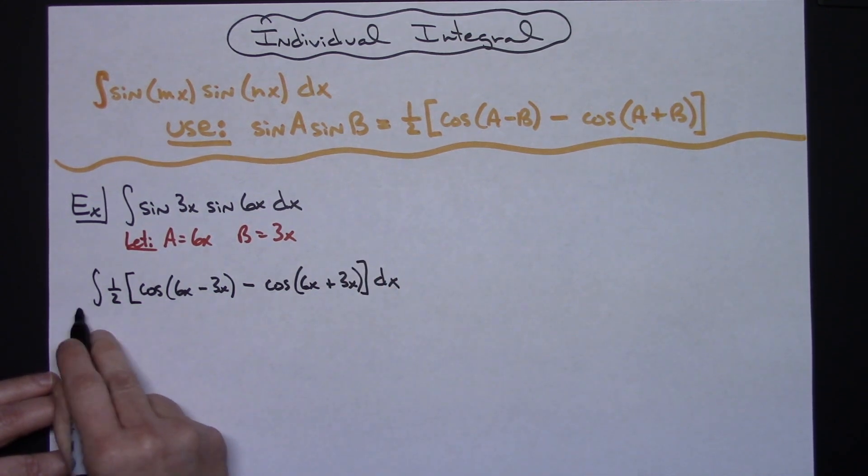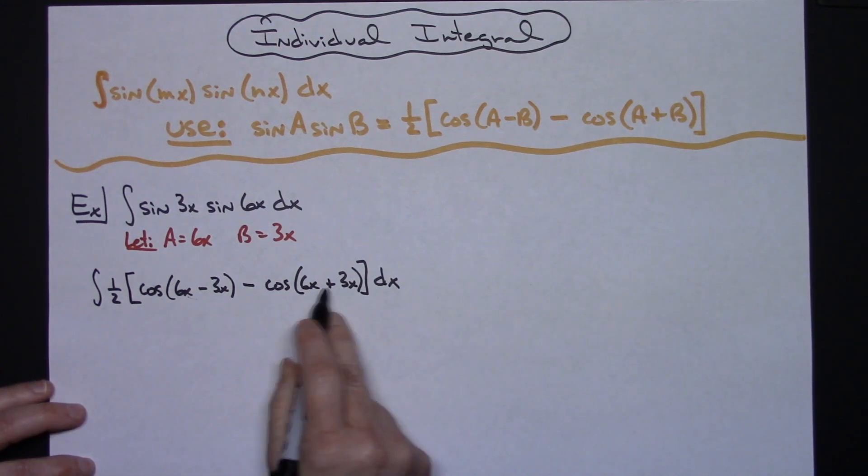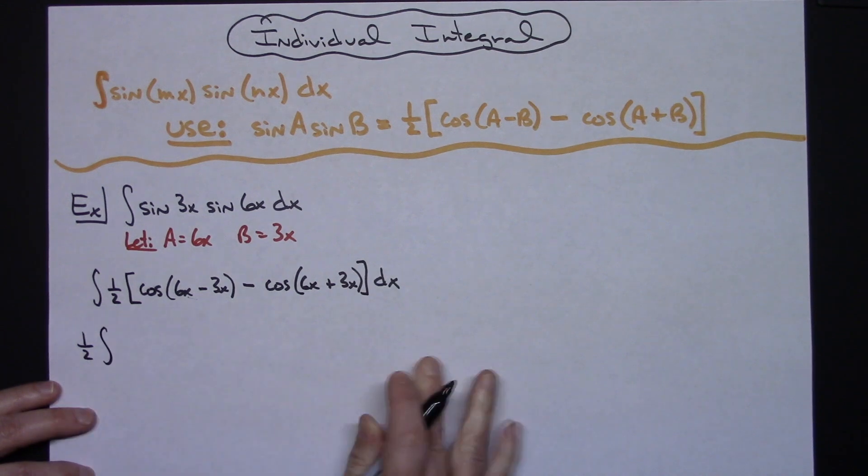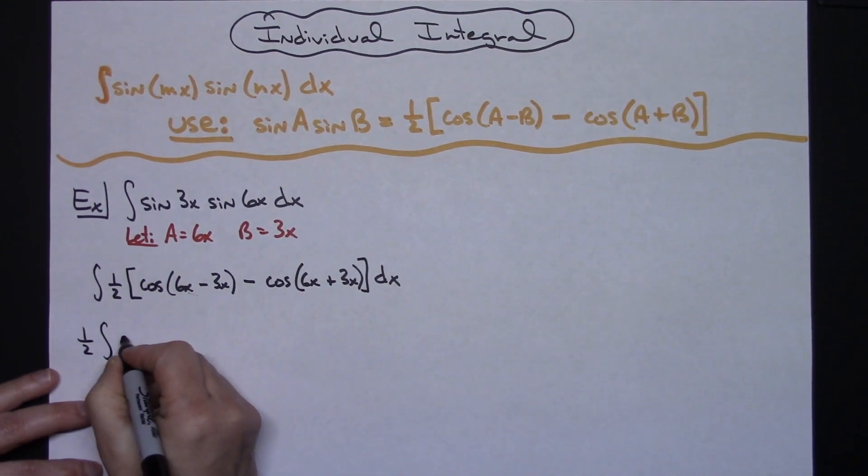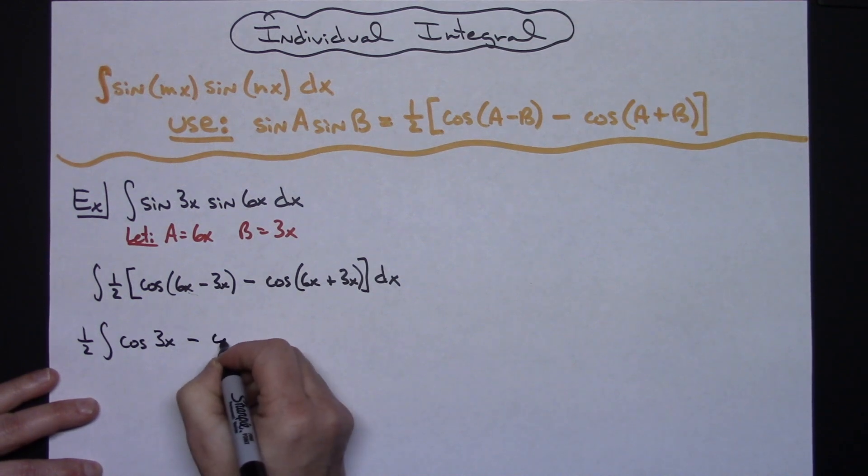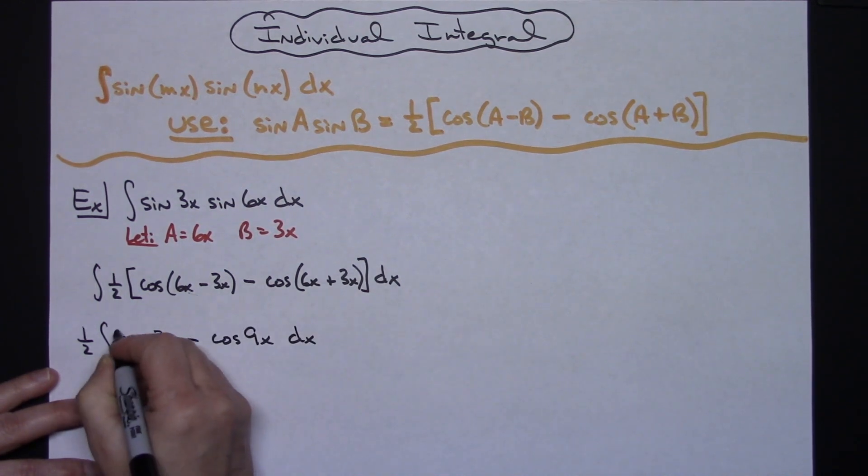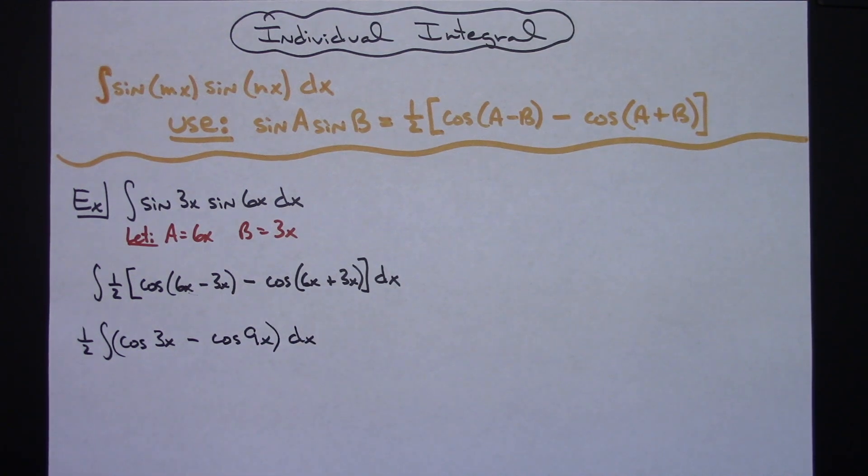On this next step, I'm going to go ahead and pull that one half out, and do the arithmetic there in the center. So I'm going to have one half times the integral of cosine of a 3x minus cosine of a 9x, and then dx.